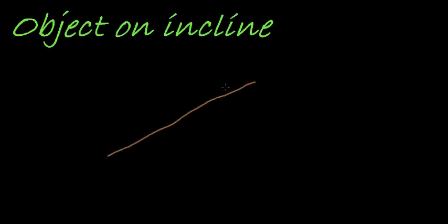Hi and welcome to this lesson where we are going to apply some of Newton's laws, with a special circumstance where we actually have an object that is lying on an incline. Imagine I have a surface, and on that surface — doesn't matter whether it's smooth or rough — I have an object. Intuitively, we know that this thing is going to slide down the surface, but we want to figure out why, what are all the forces acting on it, and at what rate is it sliding down?